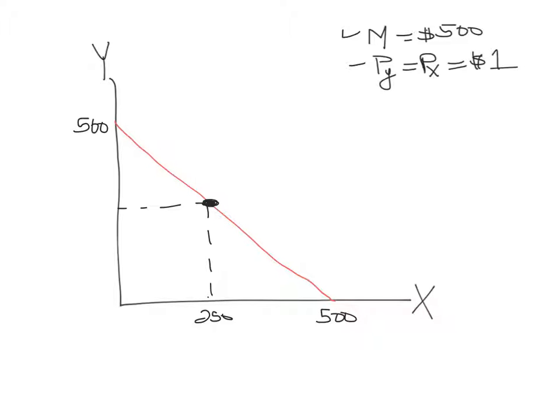So from this point on, now what happens if the government charges you a consumption tax of $1 on every unit of good X that you buy? How would this look like? Well, essentially good X costs $2 now for the consumer.